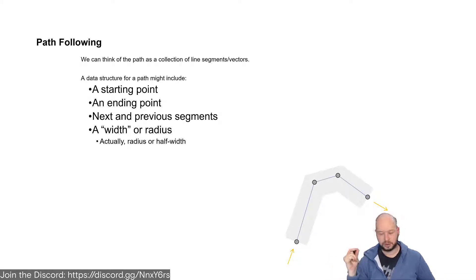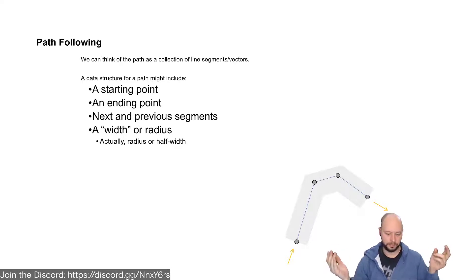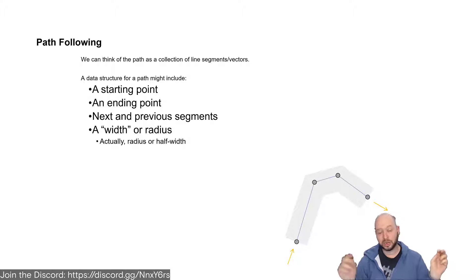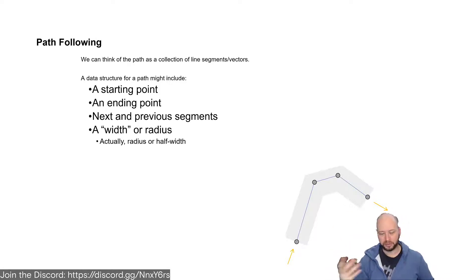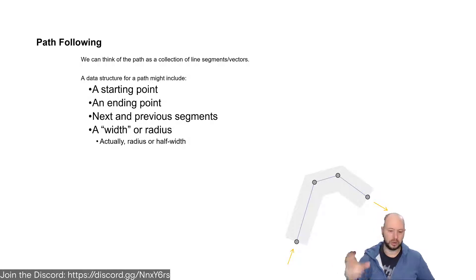The edges are directed, so it's a directed graph — that's a very important point. Otherwise you wouldn't know which direction to go. Paths do have a starting point and generally have an ending point, although you can have paths that loop on themselves. Usually you have an ending point, and you have a next and previous segment relative to the current segment you're on.